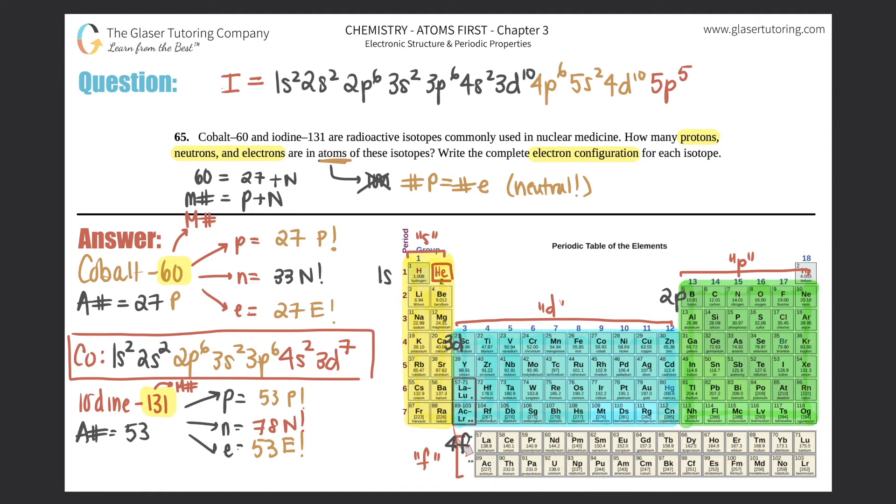So that's 5p5. And that's it. This is an atom, so we don't have to add or subtract any electrons. Box that answer off. That's the electron configuration for iodine. And yeah, that's the end of this question. So check that one off.